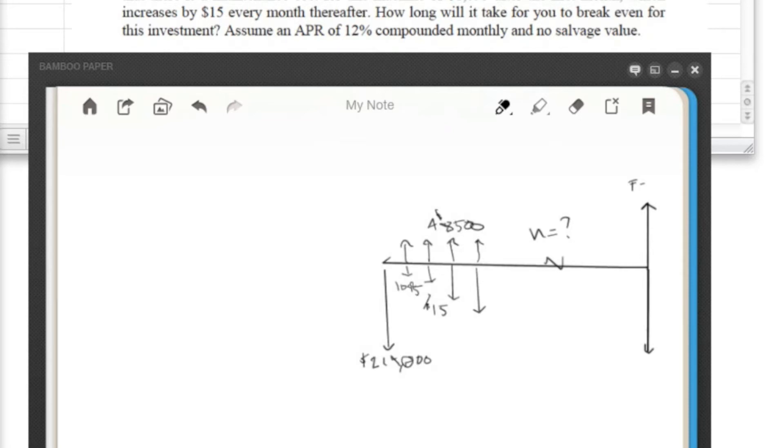You're purchasing a new dozer for $214,000 and you do some calculations and expect that it's going to increase your productivity to earn you an extra $8,500 a month. The manufacturer tells you that the maintenance cost for it is $1,095 after the first month and it increases by $15 every month thereafter. You want to know how long it's going to take you to break even for this investment, given an APR of 12% compounded monthly, and assume that there's no salvage value at the end.